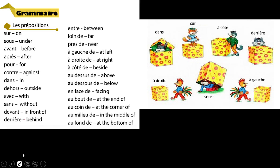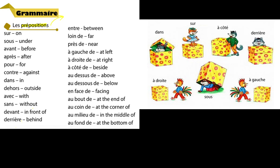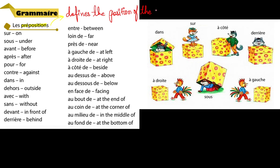So what are prepositions? Firstly, we should know. As the words suggest us, prepositions are something that defines the position of an object. So the words which define the position of an object are called prepositions.